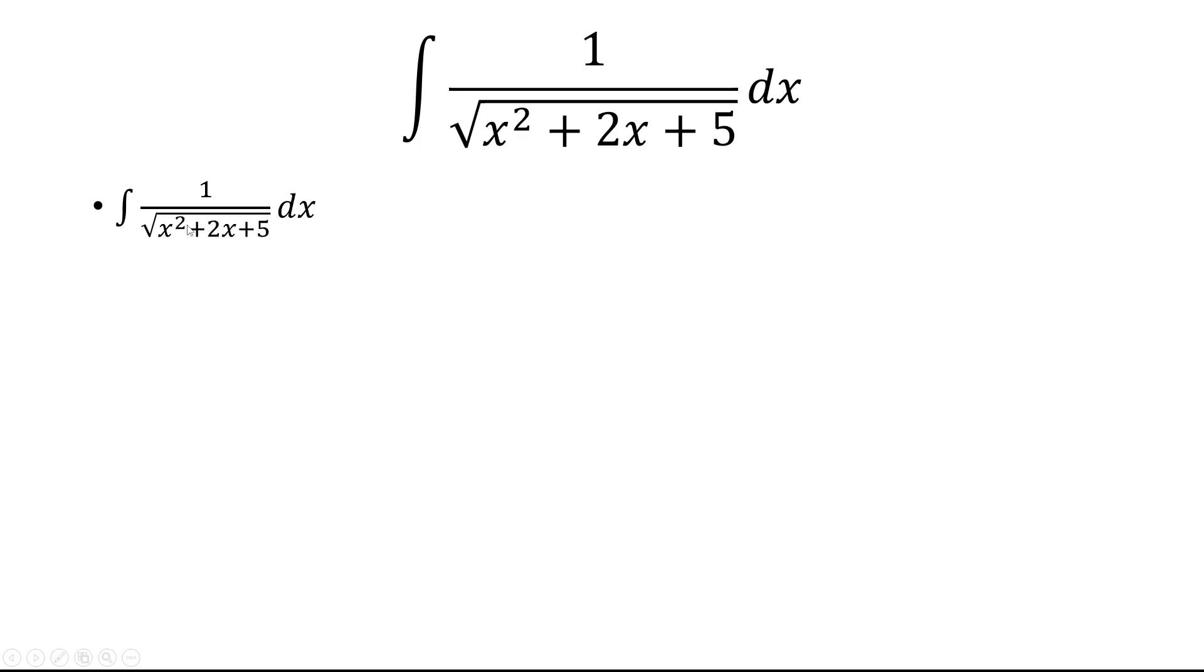Let's first factor this out. So we can think of this as x squared plus 2x plus 1 plus 4. And then that's just x plus 1 quantity squared plus 4. And then we'll make a u substitution. We'll let u equal x plus 1, so du is equal to dx.